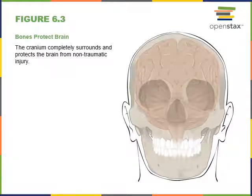Protection is another major function of the skeletal system. We see here the example of the cranium protecting the brain. Another example would be the ribs and sternum that protect the lungs and heart, or the vertebral bones that protect the spinal cord.